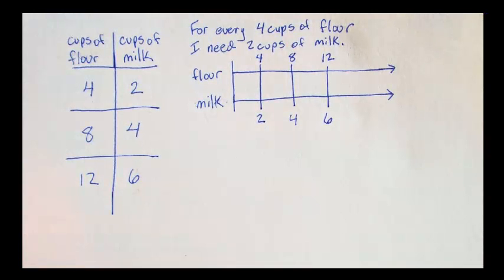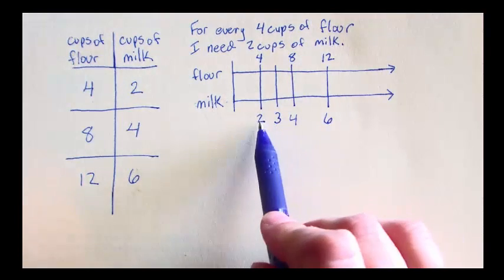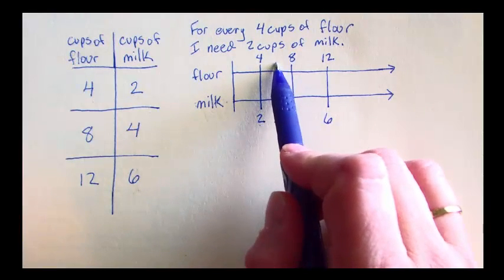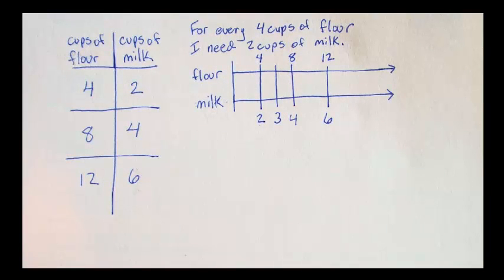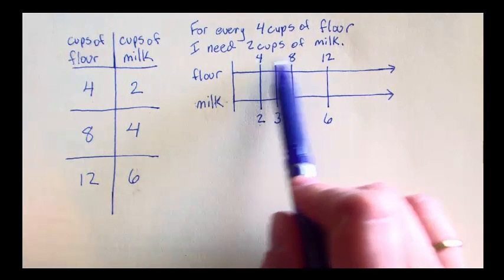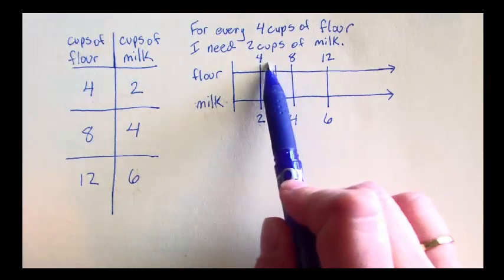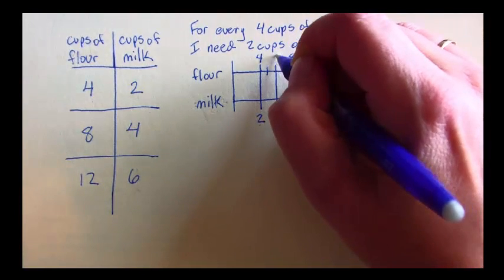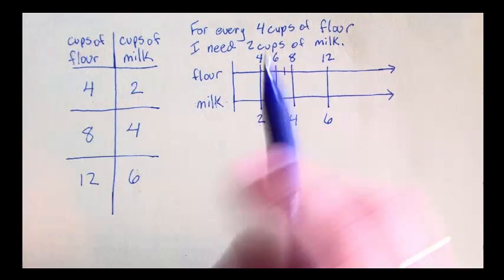What if I only have 3 cups of milk? 3 is halfway between 4 and 2. If I go across on my number line, I'm halfway between 4 and 8. What number is halfway in between 4 and 8? Well, there are 4 numbers between 4 and 8, and 4 divided by 2, halfway, is 2. So I'm going to add 2 to 4. 4, 5, 6, 7, 8. So for every 3 cups of milk, I need 6 cups of flour.